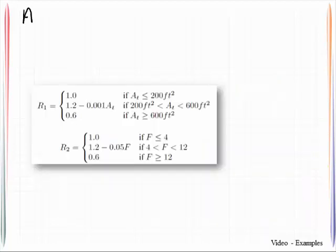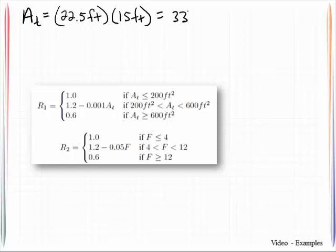Alright, so we will go ahead and compute that tributary area, 22.5 feet multiplied by that 15 feet, gives us 337.5 feet squared.